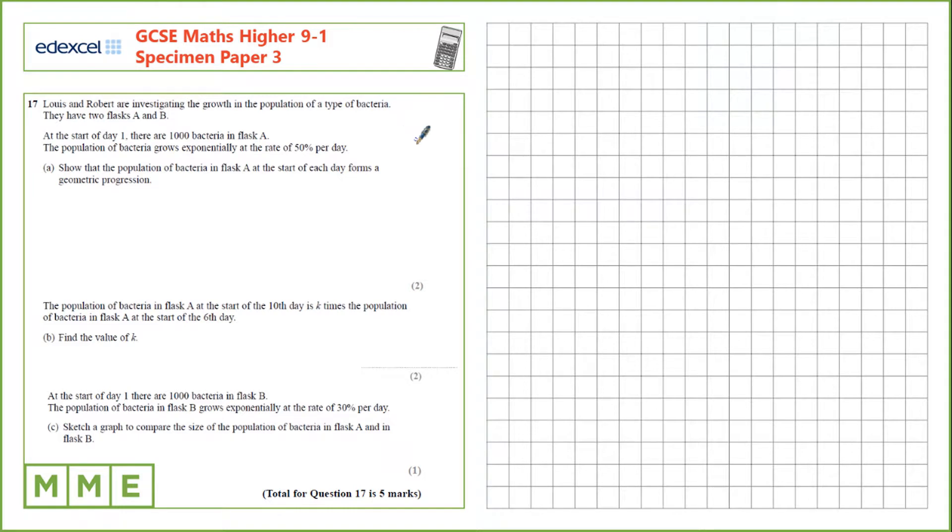Question 17. Louis and Robert are investigating the growth in the population of a type of bacteria. They have two flasks A and B. At the start of day one there are a thousand bacteria in flask A. The population of bacteria grows exponentially at the rate of 50% per day. Show that the population of bacteria in flask A at the start of each day forms a geometric progression.